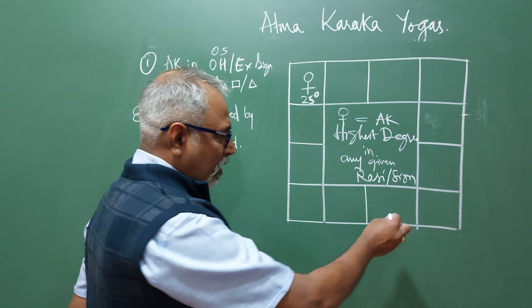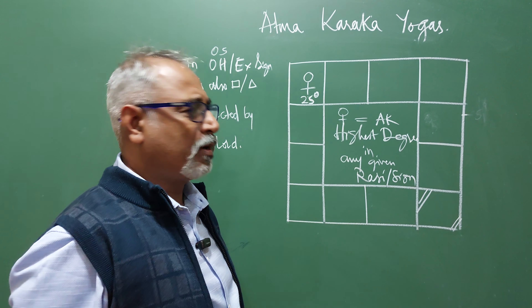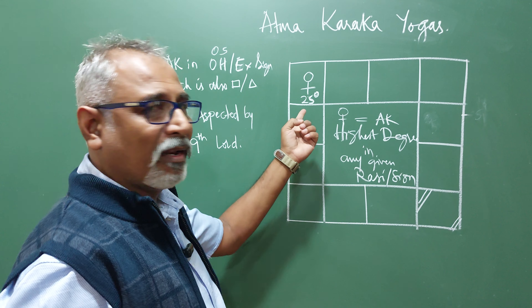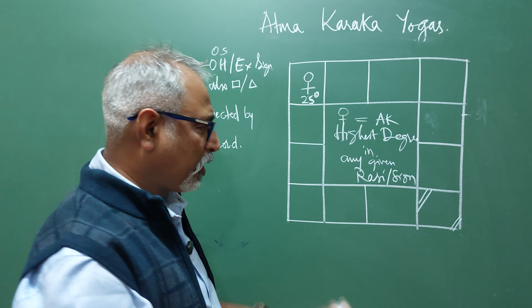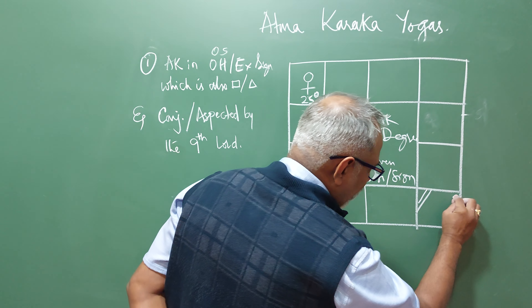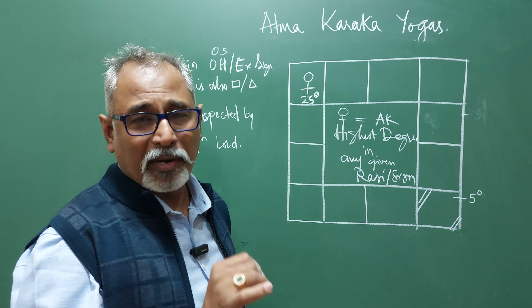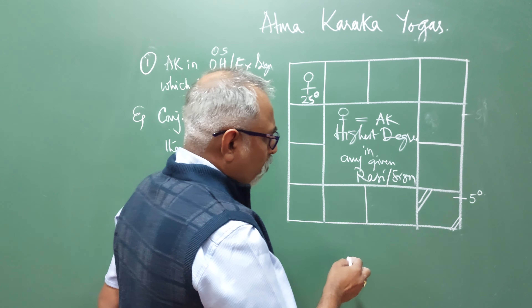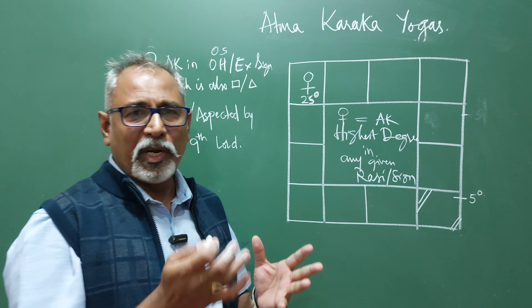Let us put Venus at around 25 degrees. It gets exalted at 27 degrees — 27 or 28 degrees, because Mars and Venus both have one degree difference. We will take Venus at 25 degrees here. Let us say Venus is the Atmakaraka for the chart — Atmakaraka in the sign of exaltation.